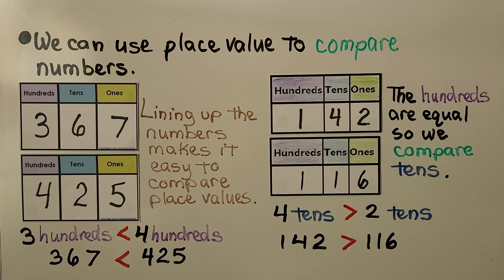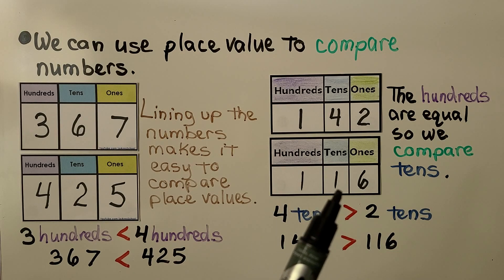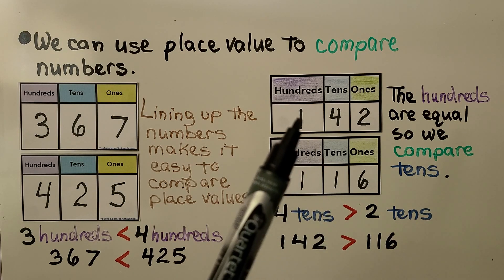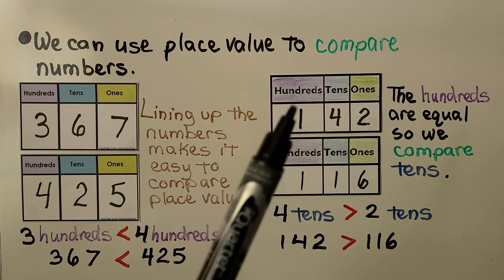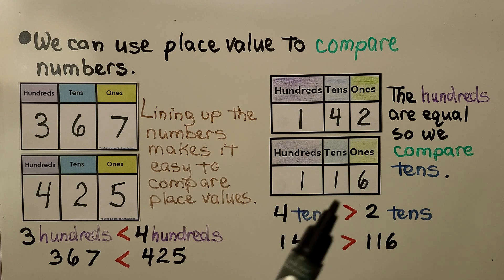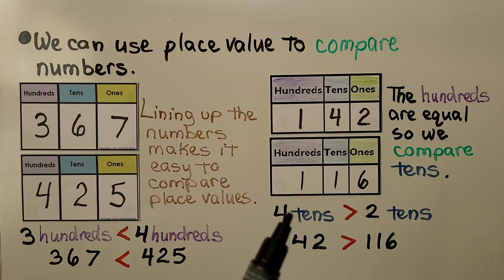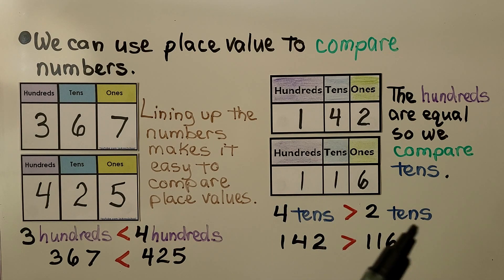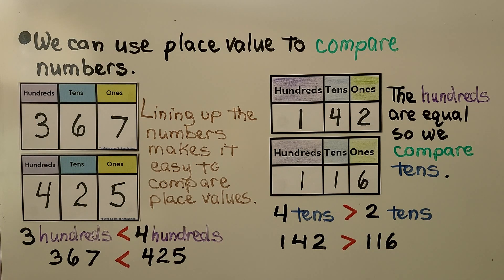Here the hundreds are equal, so we compare the tens. They have the same digit in the hundreds place, so we move to the tens place. Four tens is greater than two tens, so 142 is greater than 116.